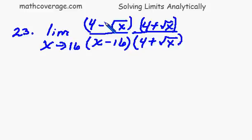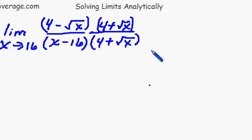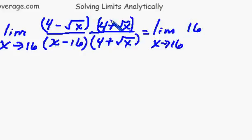So when we fold the top out, we end up rewriting the limit as x goes to 16. We multiply the top out. 4 times 4 is 16, and 4 times a positive square root of x and then a negative square root of x times 4. So you see you have 4 times square root of x and minus 4 square root of x. They're going to cancel out. And suddenly we're just concerned about the last terms here. The negative square root of x times the square root of x becomes just negative x, minus x.